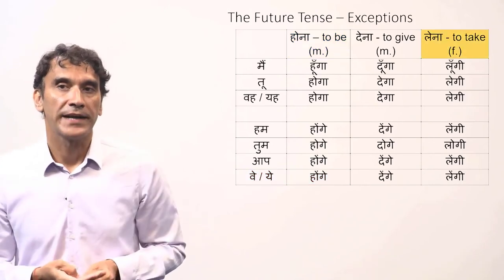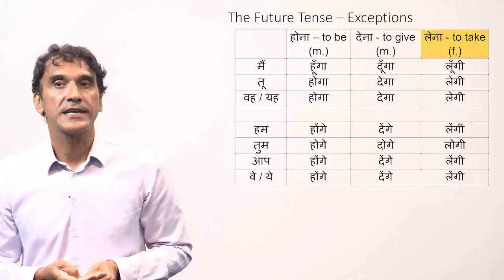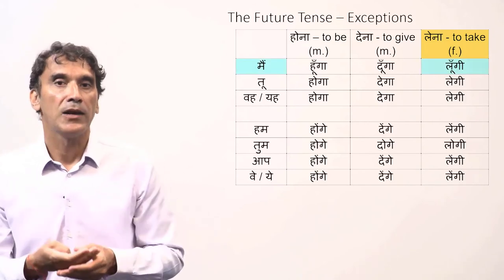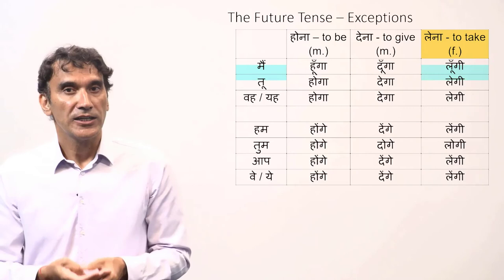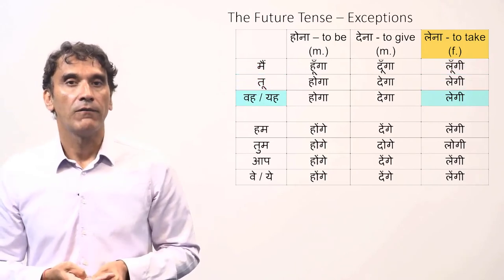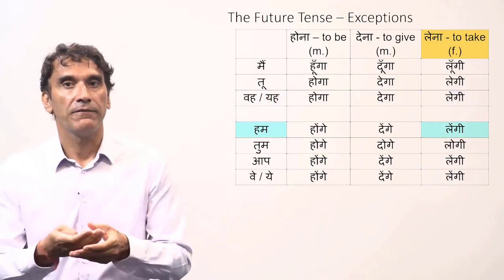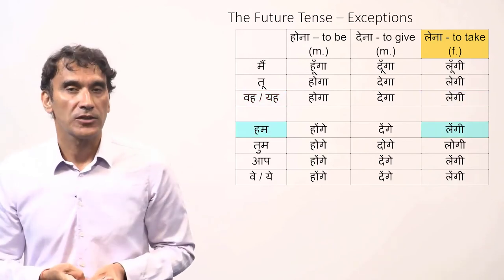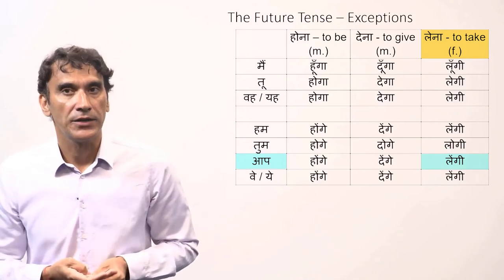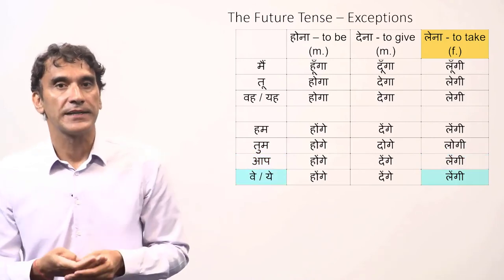For the verb 'lena' (to take), here are the feminine forms: 'main lungi' (I will take), 'tu legi' (you will take), 'wo/ye legi' (she will take), 'hum lengi' (we will take), 'tum logi' (you will take), 'aap lengi' (you will take), 'we/ye lengi' (they will take).